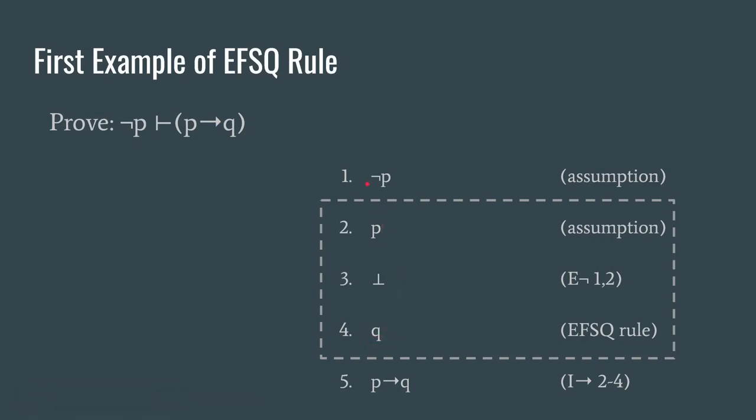In this case we want Q so that's the one we'll write. So starting from the top then, ¬P is our premise so we list that as an assumption as always. We know that what we want is an arrow statement with P as the antecedent so we list P as a new assumption. Then notice that gets us a contradiction right away. So we can list falsum according to our elimination of negation rule on lines one and two.